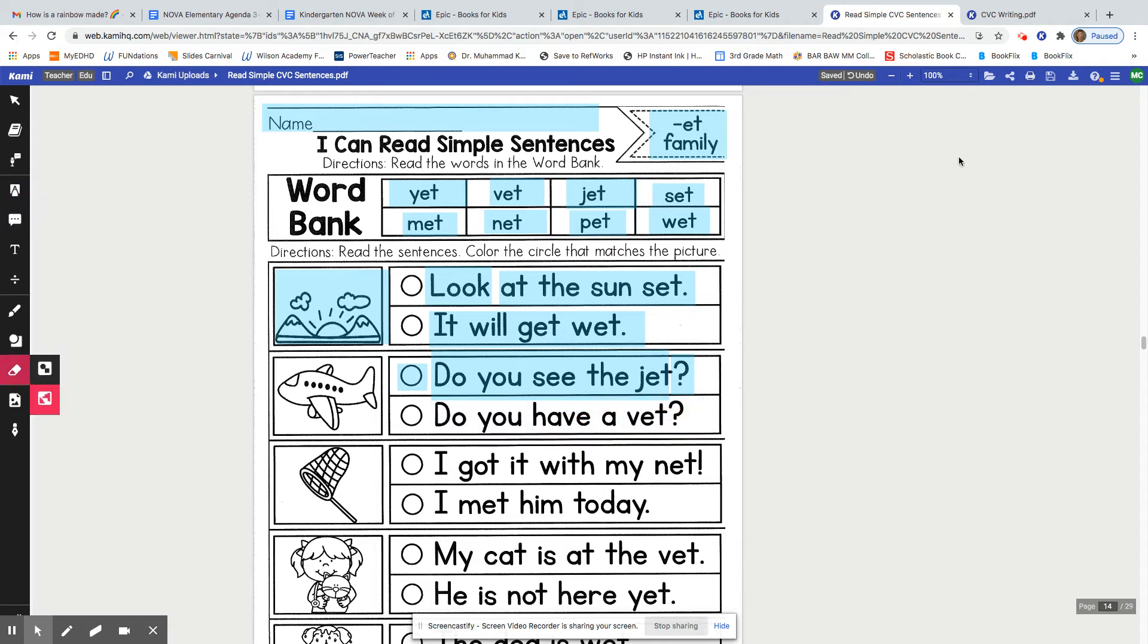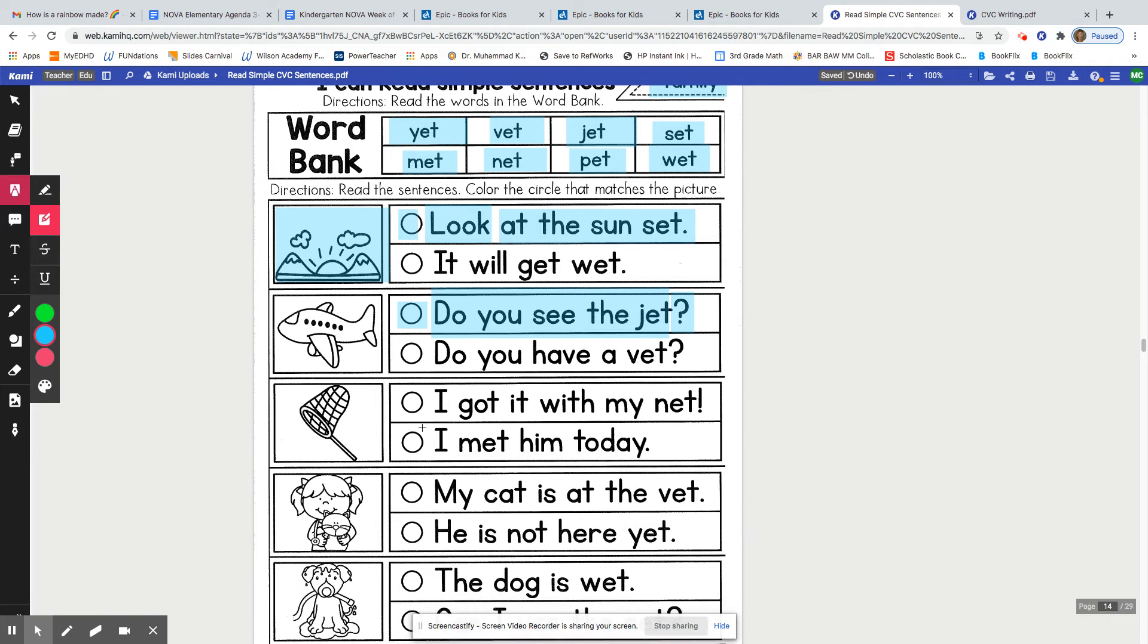I just realized I didn't have you write the answer for the top one. Silly Mrs. Carr. We were supposed to show the sun set. All right. Let's go to the third one. With the net. I got it with my net.